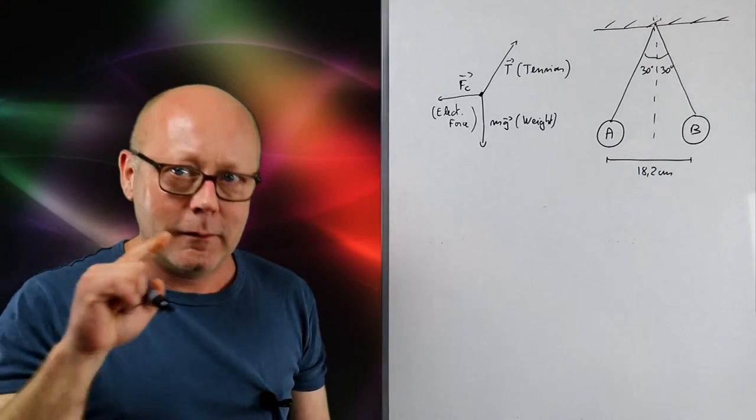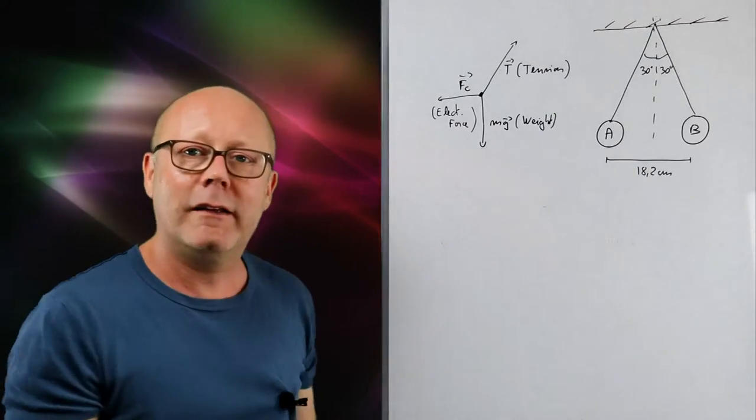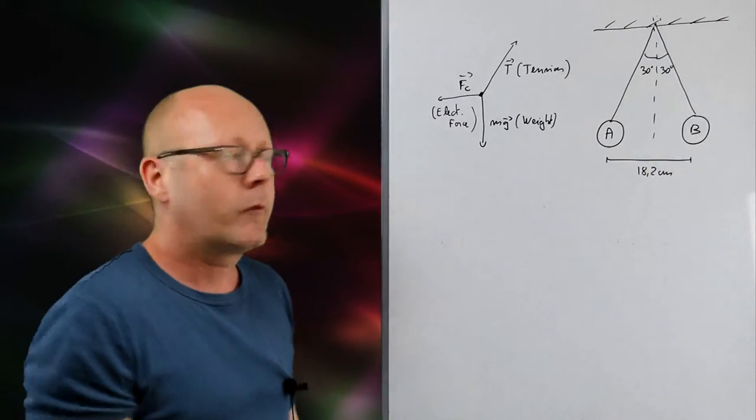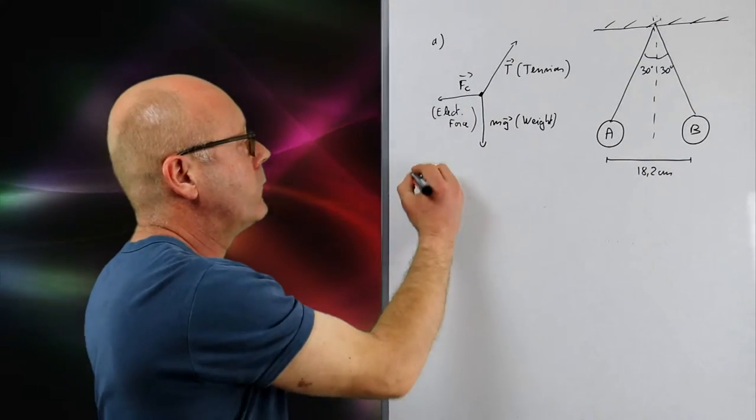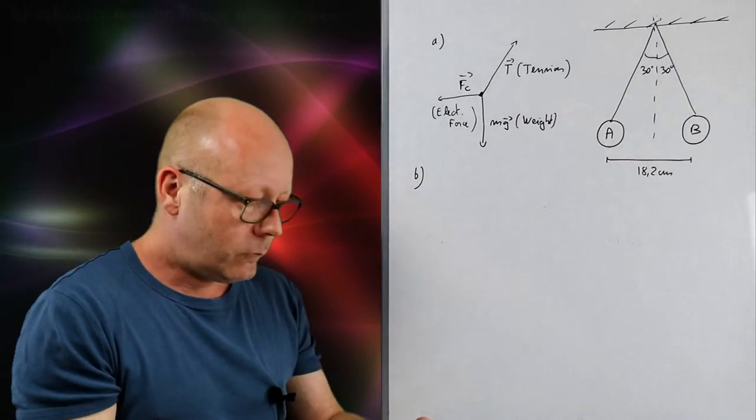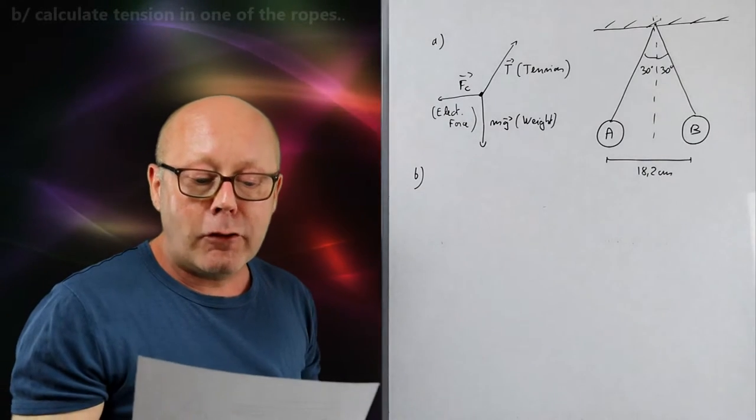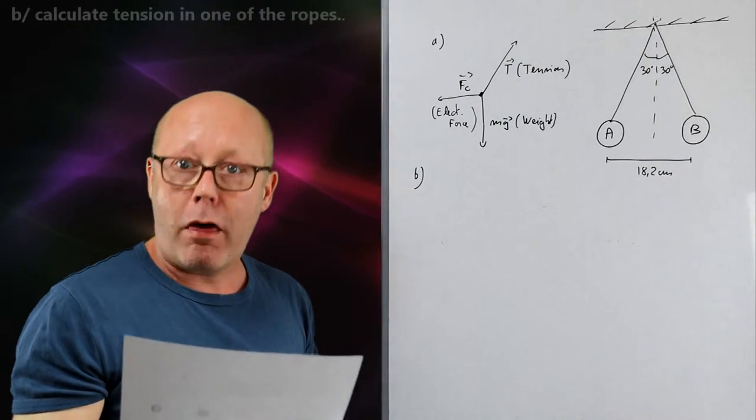Pretty easy to get two marks. But because it's easy, make sure that you do exactly what they tell you to. Label and name. So that was the first question. Second question. Calculate the tension in one of the ropes. Three marks.